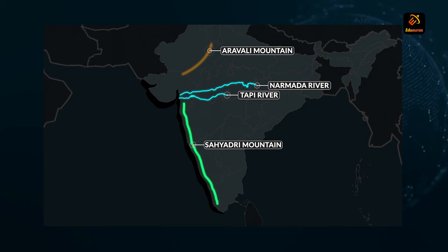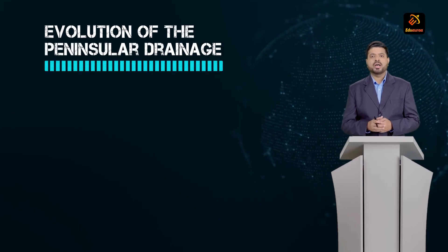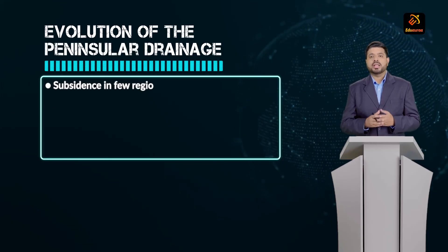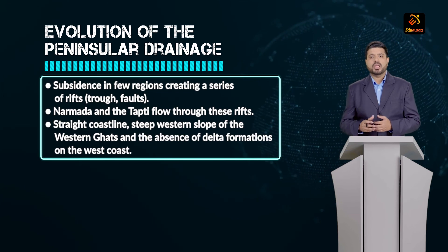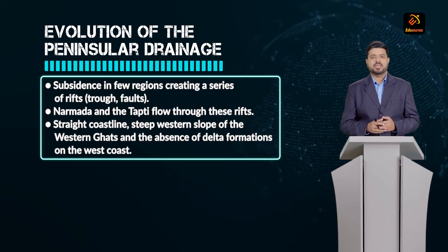This happened because of the collision of the Indian plate. Due to this, there is subsidence and a few regions where rift valleys formed. The Narmada and Tapi rivers flow through these rift valleys.